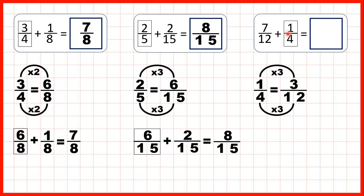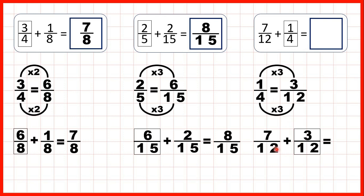We know that one quarter is equivalent to three twelfths, so we can rewrite our question. We still start with seven twelfths, but instead of adding one quarter we add three twelfths, because that's equivalent to one quarter. The denominators are the same, so we keep the denominator the same in our answer and just add the numerators. Seven plus three is ten, so our answer is ten twelfths.